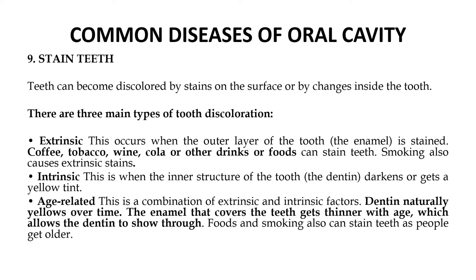Another type of tooth discoloration is the intrinsic type. This occurs when the inner structure of the tooth darkens or gets a yellow tint. The third type is the age-related factor, which is a combination of both extrinsic and intrinsic factors.